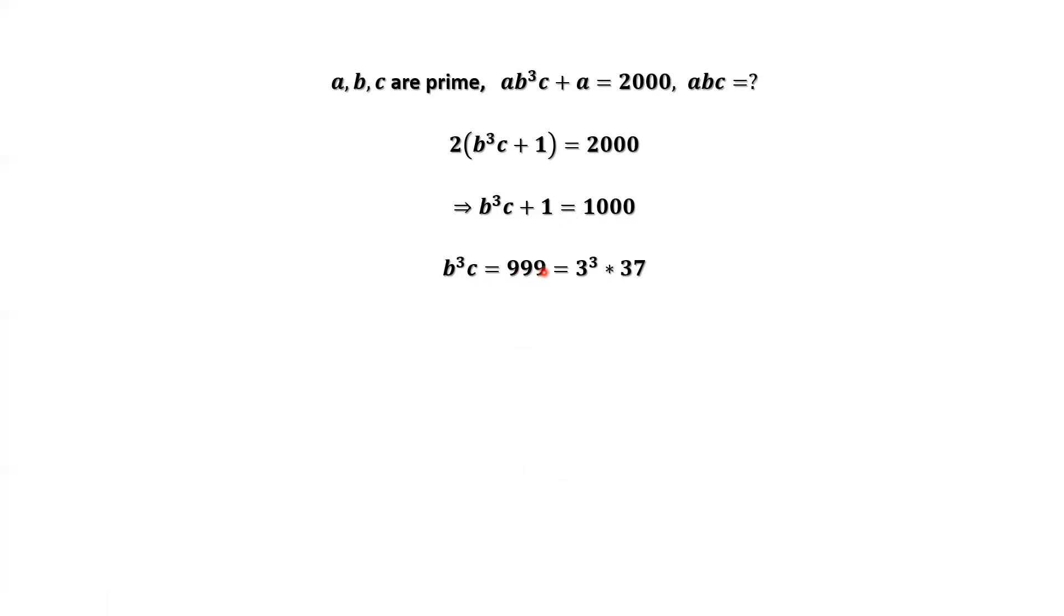We consider the prime decomposition. From the given condition, B and C are also prime. This implies C equals 37 and B equals 3. This is the only choice.